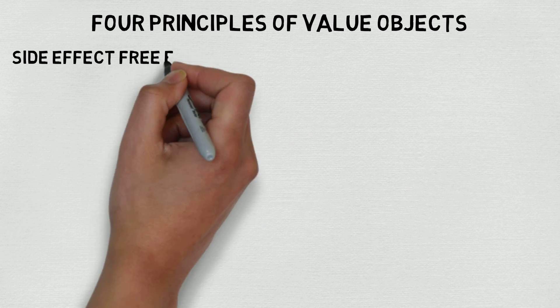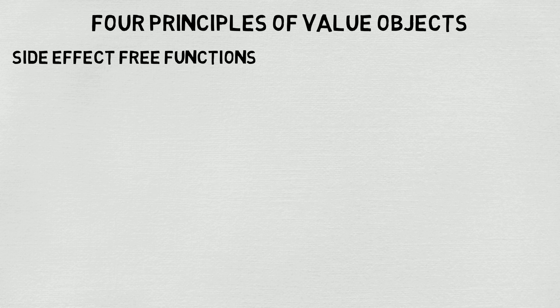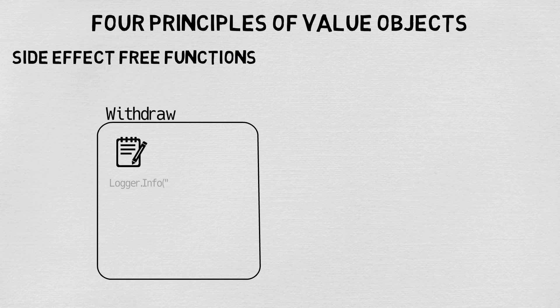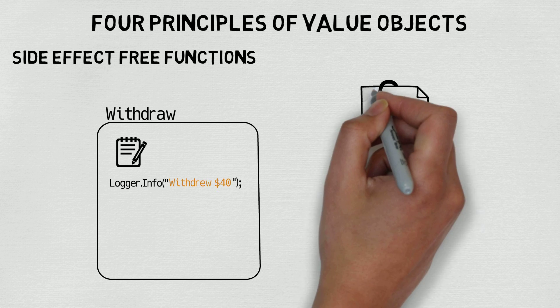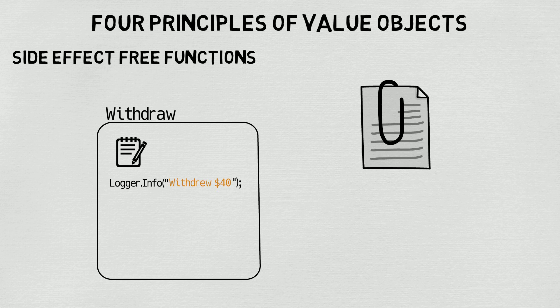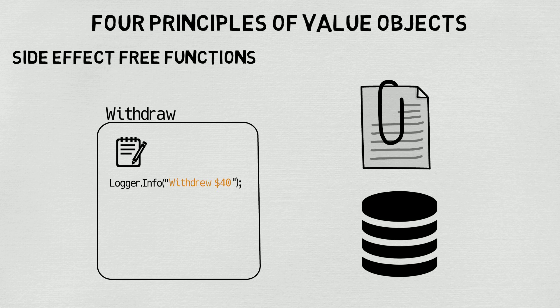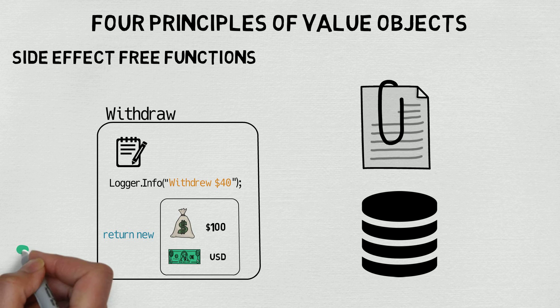The last principle is they must contain side-effect-free functions. Remember when we tried to perform logging inside of our withdraw function. That logging had the potential to write to a file or even a database, creating a side effect within our function. When you're designing your value objects, make sure your functions only measure or quantify something.